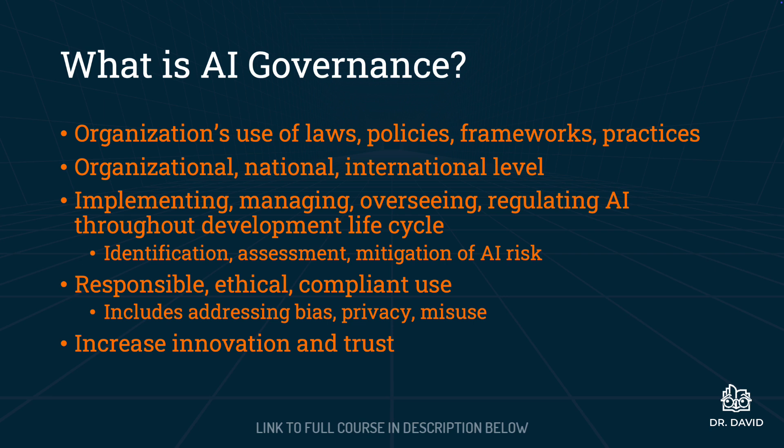As someone involved in risk management, we are specifically interested in identifying, assessing, and mitigating AI risk — and we will talk a lot about that throughout the entire course. AI governance also involves the responsible, ethical, and compliant use of artificial intelligence. This includes addressing bias, privacy, and misuse. AI governance also helps to increase innovation and trust.